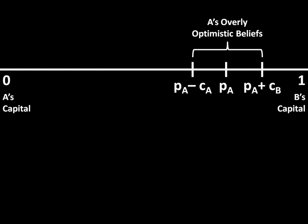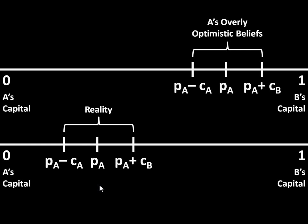But notice that I've labeled this A's overly optimistic beliefs — this is actually not the reality. B knows what's really going on. In reality, A is much less likely to win than what it believes. There's a very large discrepancy where the real PA is down here on the left end of the spectrum, and A believes it's much further to the right and therefore much more advantageous for A than it actually is. So in reality, the bargaining range is here, where anything between this and this is mutually preferable to war. A, however, believes that the bargaining range is way down to the right, and note that those two ranges do not overlap.